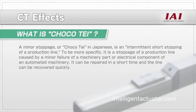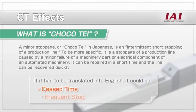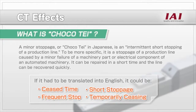Chocote is a Japanese term referring to a brief stopping of a line. More specifically, it refers to when a line is stopped briefly due to a simple mechanical or electrical problem with an automated machine, but can be fixed quickly and resume operation almost immediately. Equivalent English terms include ceased time, frequent stop, short stoppage, and temporarily ceasing.